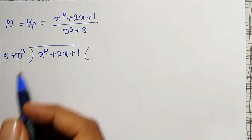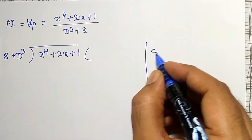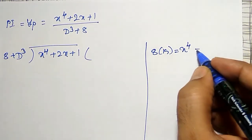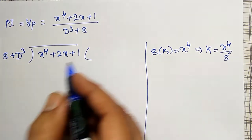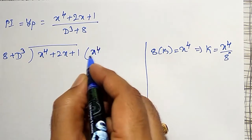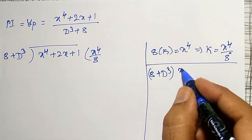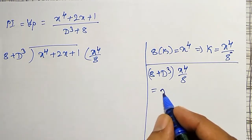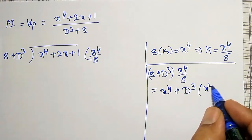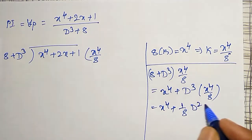For the first step: what must I multiply by 8 to get x⁴? That is k = x⁴/8. So the first term of the quotient is x⁴/8. Multiplying (8 + d³) by x⁴/8: the 8 cancels x⁴, and d³ of x⁴/8 gives the third derivative. First derivative gives 4x³/8, second derivative gives 3x²/2, and third derivative gives x⁴ term — after subtraction we carry down to get x⁴ + 3x.